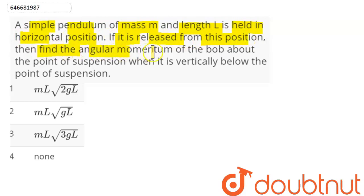find the angular momentum of the bob about the point of suspension when it is vertically below the point of suspension.